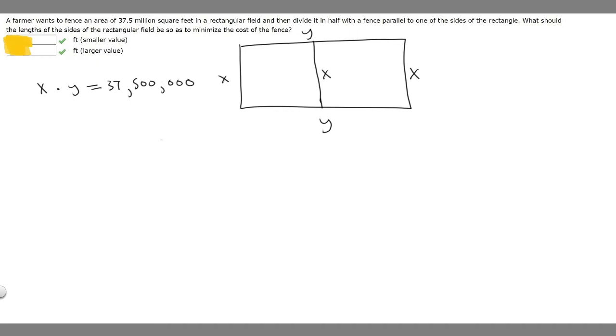Now what we want to do is solve for one of our variables because it's going to make it easier. So if we go ahead and do that, let's just solve for y. So we know that y is going to be equal to 37,500,000 divided by x. I'll show you why we did this.